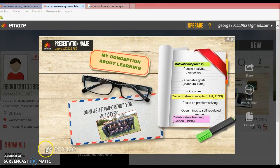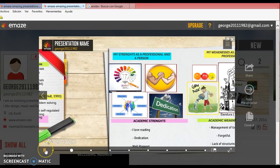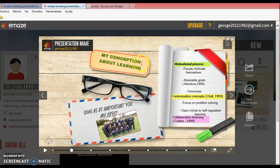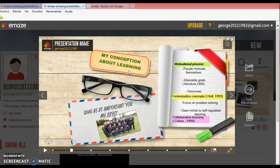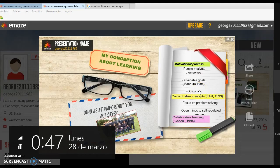Here I'm going to keep my conception of learning, so basically there are three aspects to take into account: motivational process, contextualized concepts, and collaborative learning. In terms of motivational process, people motivate themselves as facilitators will set actionable goals, so when they reach those goals they finally get an outcome that ensures their proper learning process.